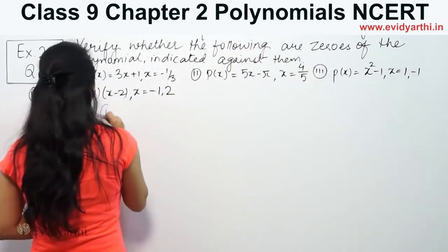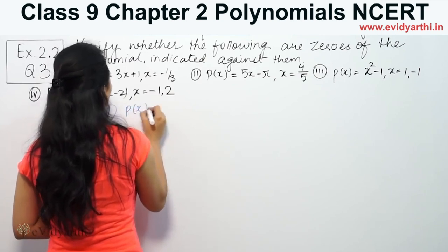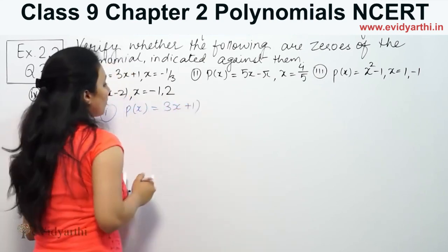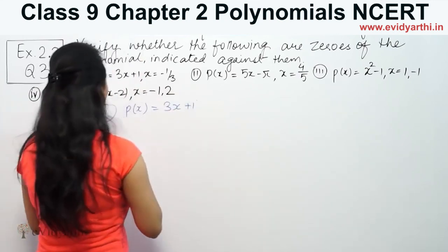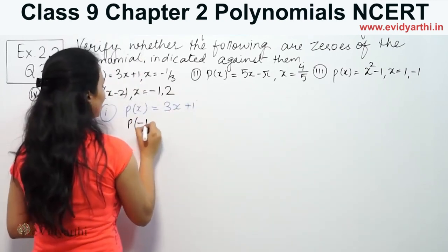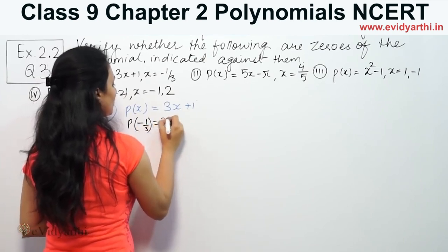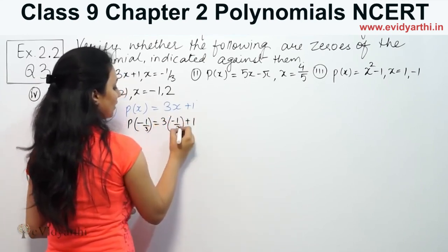Let's begin with the first part which is P(x) = 3x + 1. We have to check this at x = -1/3. So P(-1/3) = 3(-1/3) + 1.